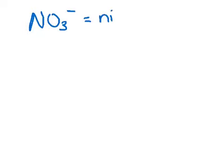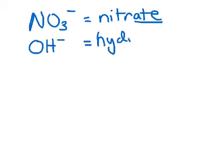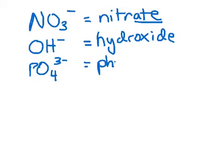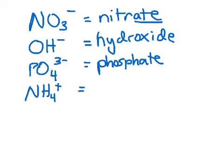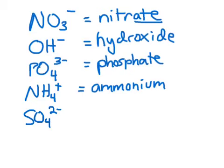Here is our list. NO3 with a minus charge is nitrate. OH with a minus charge is hydroxide. PO4 with three negative charges is phosphate. NH4 with a one positive charge is ammonium. And SO4 2- is sulfate.